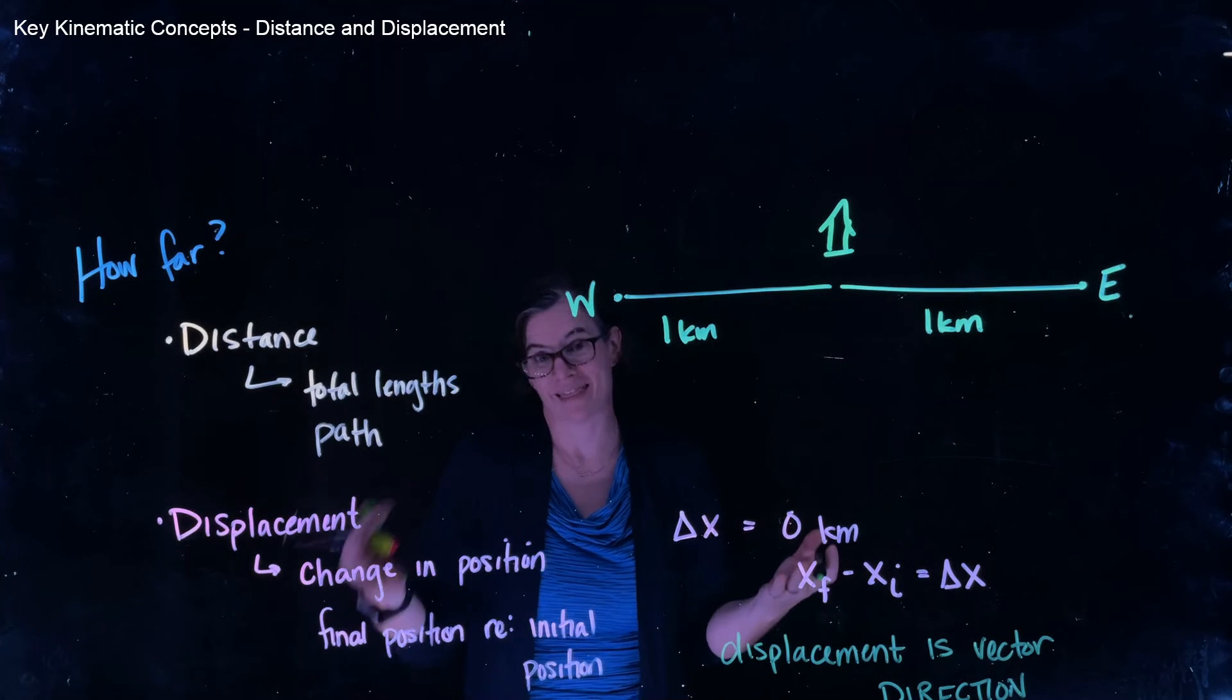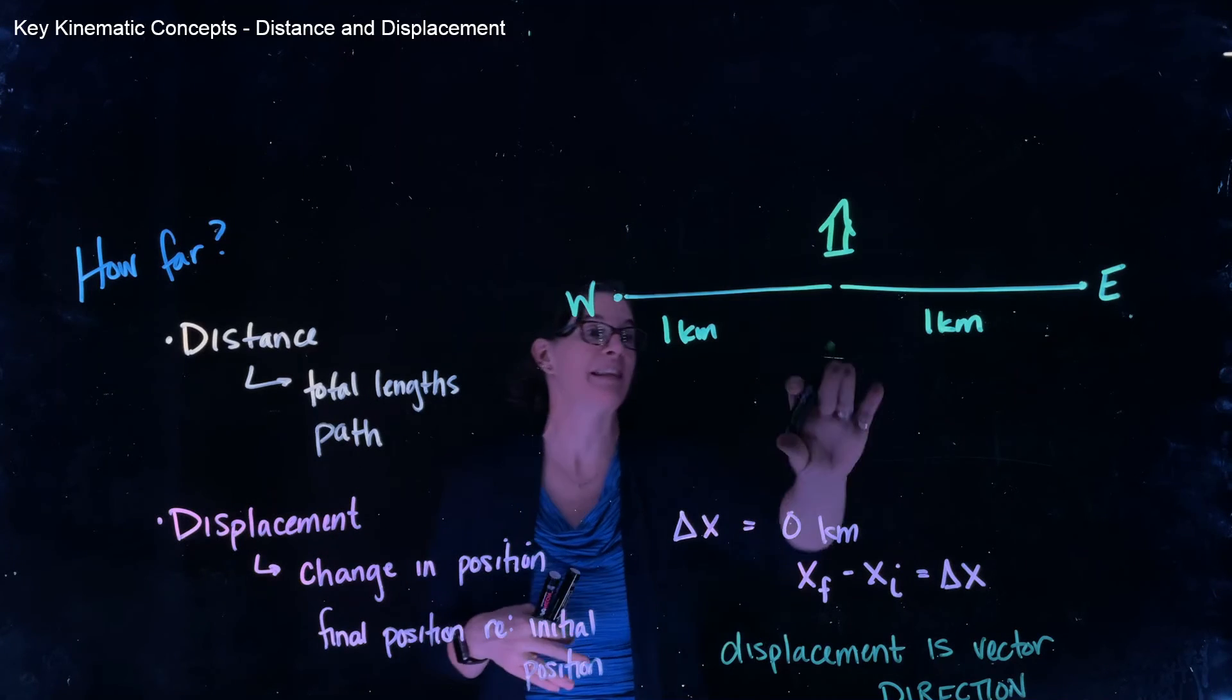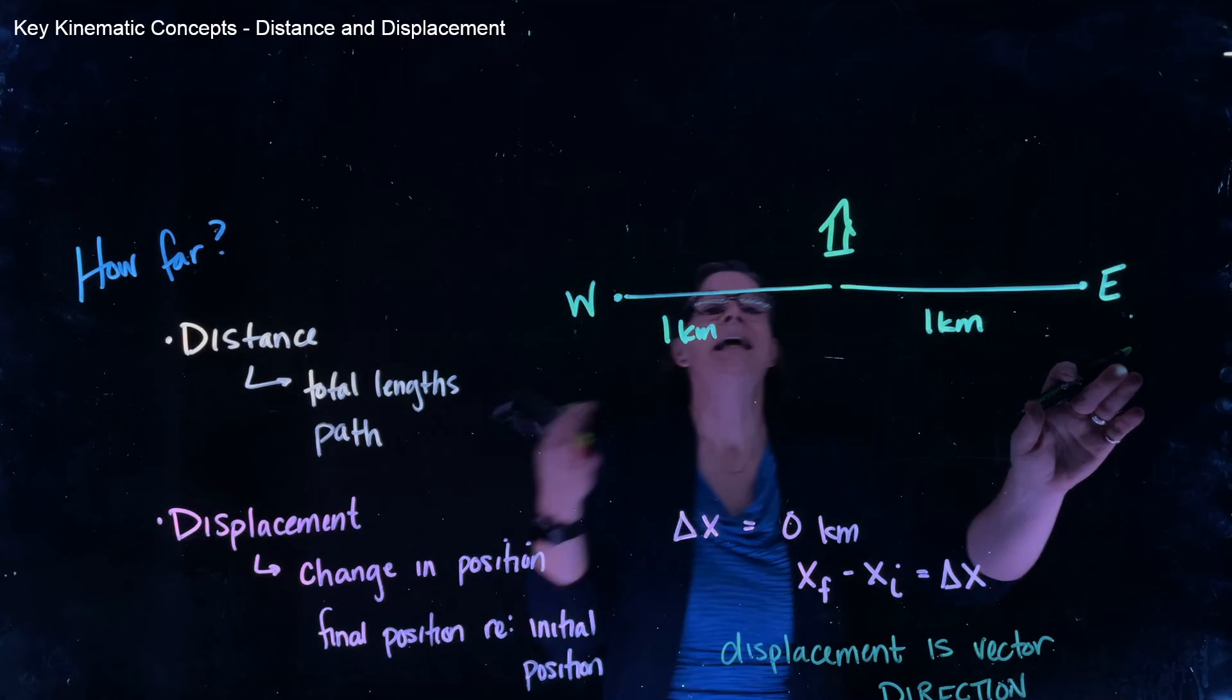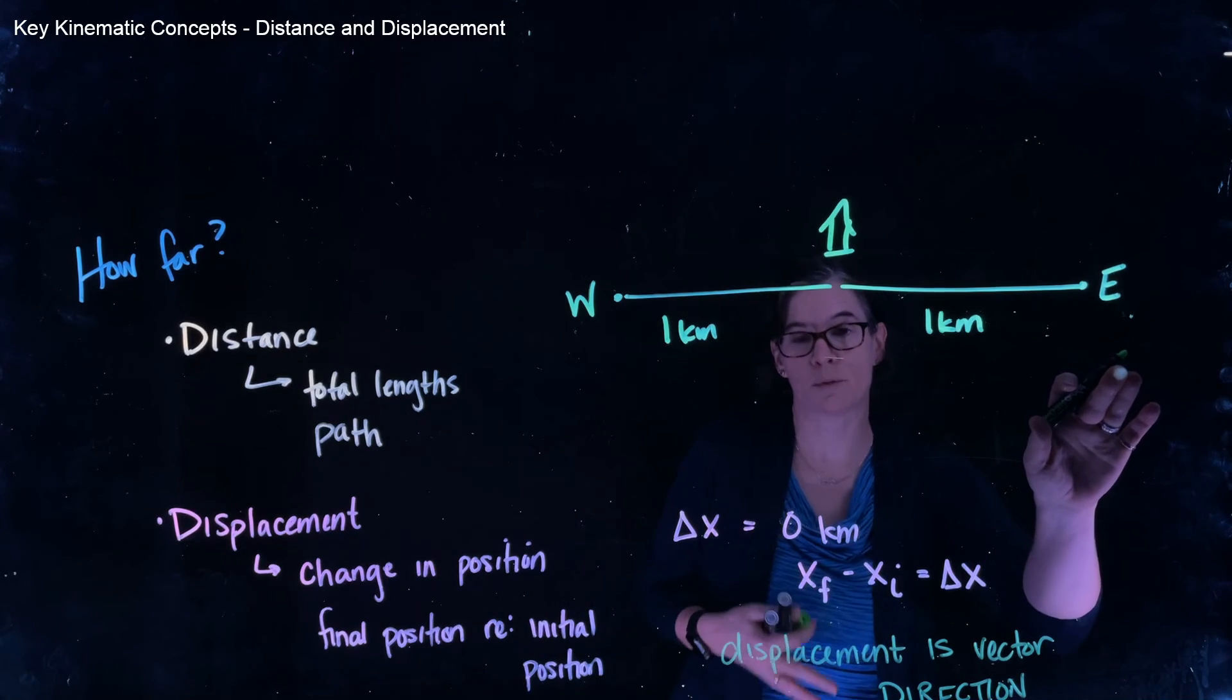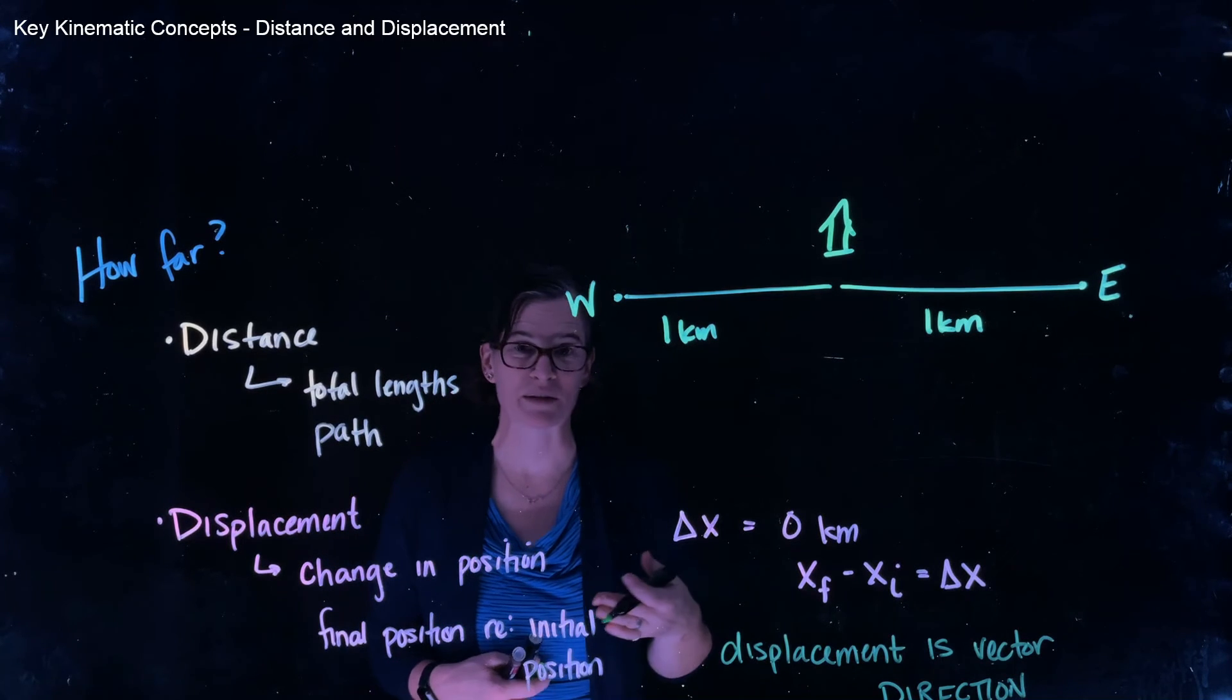Her displacement, then, must be represented slightly differently. Her displacement in this case would be one kilometer east. Direction is important. Her displacement in the second case, one kilometer west. Direction is important.